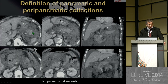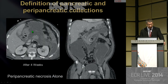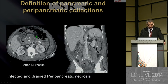Back to the case of only peripancreatic necrosis: the pancreatic parenchyma is clearly seen everywhere with no defect of enhancement and no intrapancreatic necrosis. But around the pancreas, it is clearly not APFC — it is acute necrotic collection. After four weeks it becomes walled-off necrosis — peripancreatic necrosis alone. After 12 weeks, the patient recovers after five months of hospitalization with successful drainage.